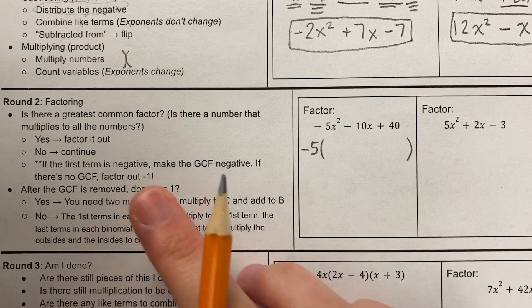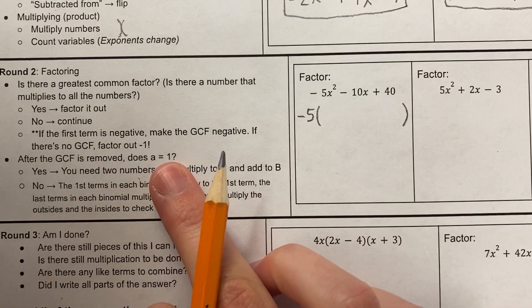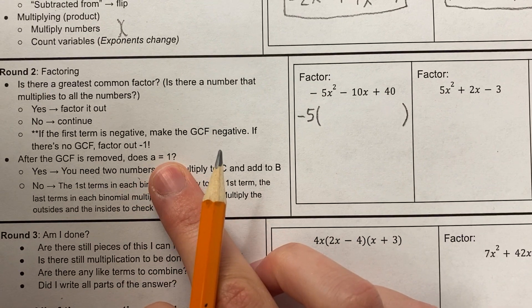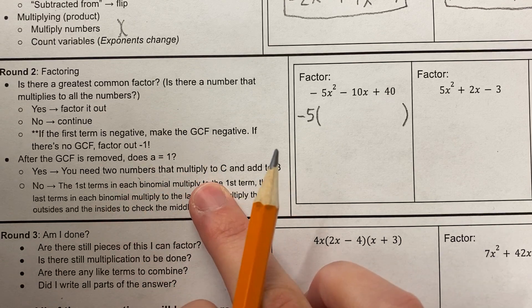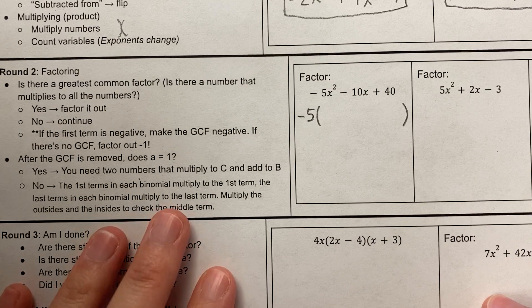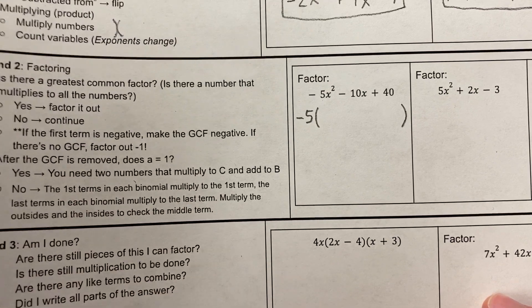Now, after the GCF is removed, I still need to ask myself, does a equal one? Does that front number equal one? If yes, that makes the problem a little bit easier. I just need the two numbers that multiply to c, add to b. If not, I have some more work to do. Let's find the easy ones.